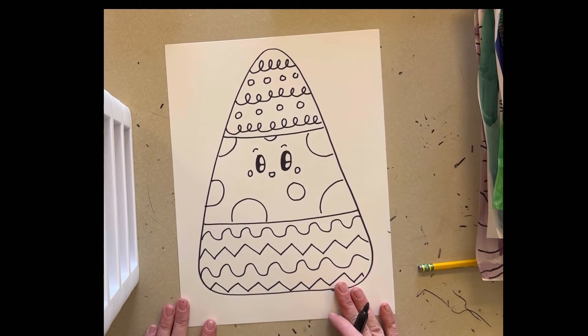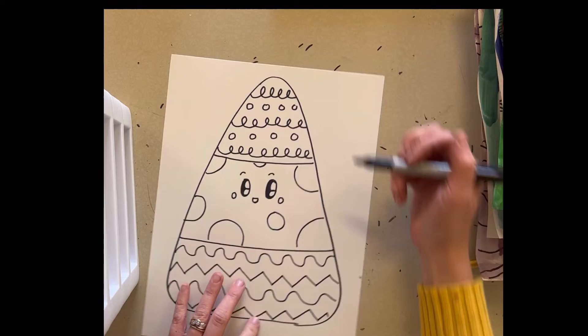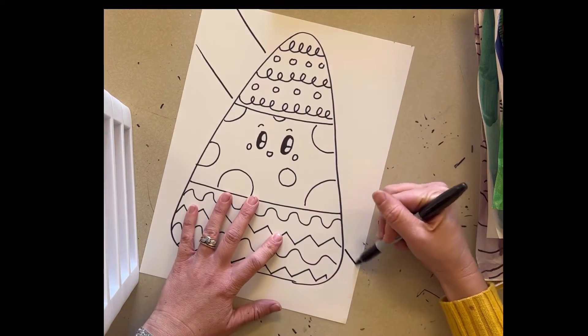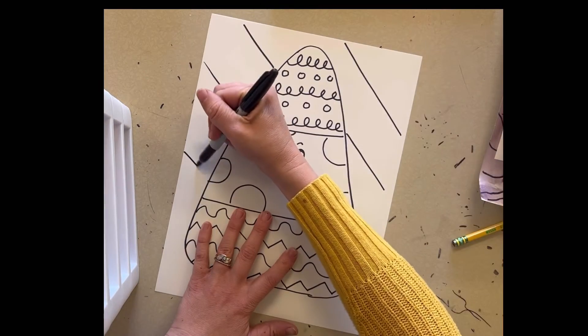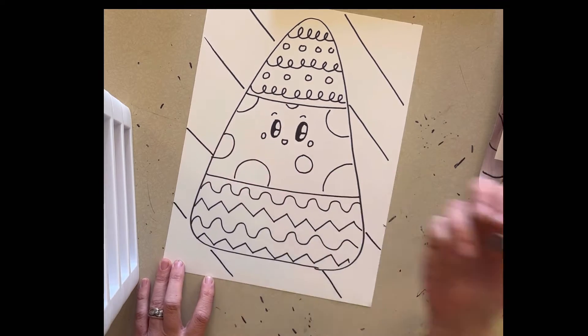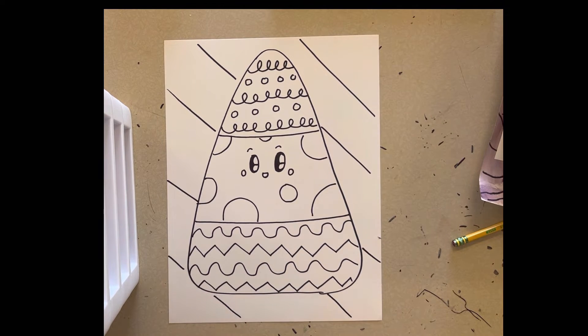So I've got my patterns in my candy corn and then I'm going to create some sort of design in the background. So I'm just going to do some lines that go across. One of my other students yesterday asked me if he could make ghosts in the background. I said, that's okay. You can do ghosts if you want, but I'm just going to do some lines like that.